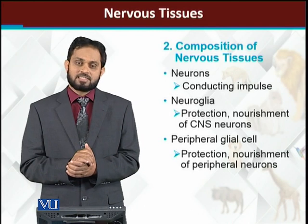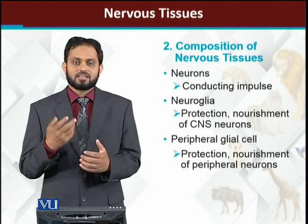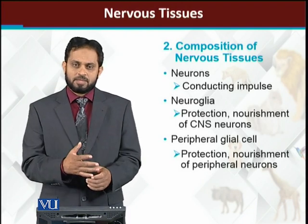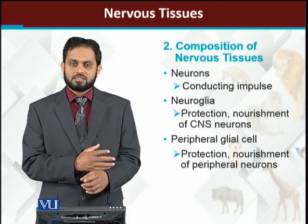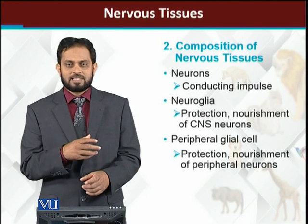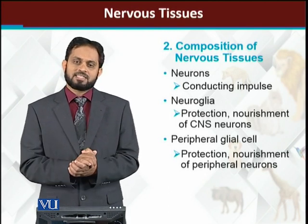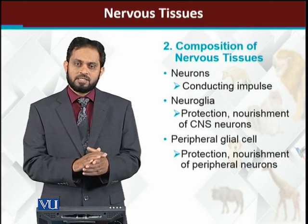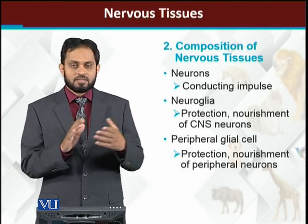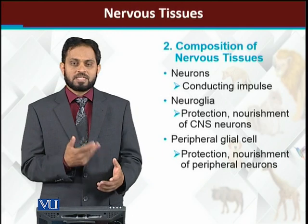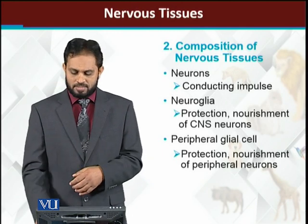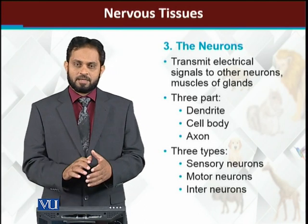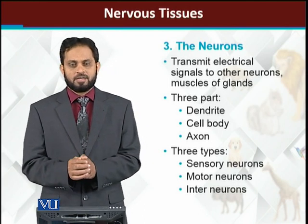In the same way, peripheral glial cells work at the periphery — the sides and surrounding areas. The nerves that are spread throughout the whole body: their protection and providing food to their neuron cells is the job of peripheral glial cells. Basically, they are for protection and nourishment of the peripheral nervous system, which consists of our nerves. The main functional role in the nervous system belongs to neurons.